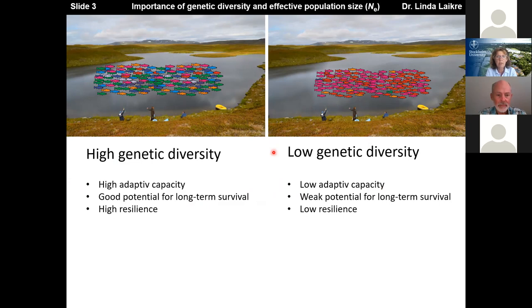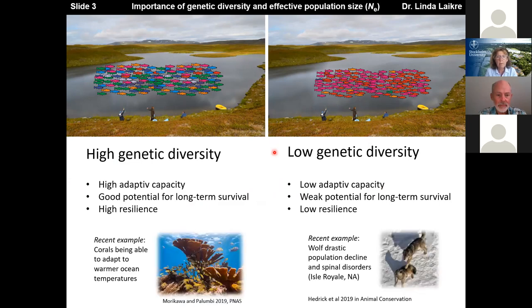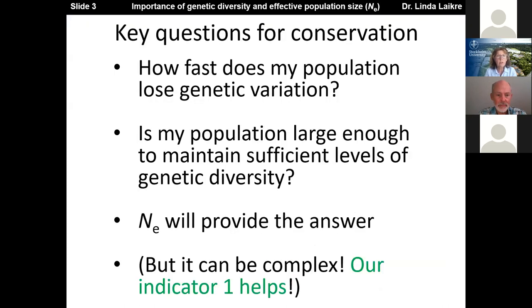We rapidly lose genetic diversity when a population becomes small. We have many examples from empirical studies on this. Corals were able to adapt to warmer ocean climates based on high levels of genetic diversity, while a population of wolves on the Isle Royale became small, highly inbred, lost a lot of genetic variation, and became functionally extinct. A key question in biodiversity conservation is: how fast does a particular population lose genetic variation? Is a population large enough to maintain sufficient levels to allow adaptations into the future? That's when effective population size, or NE, comes into the picture, because NE will provide the answer to those important questions.